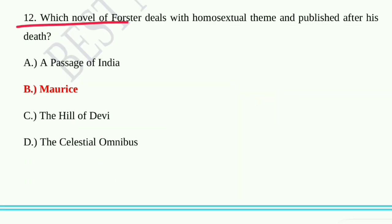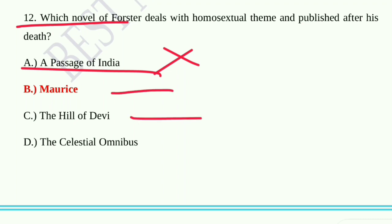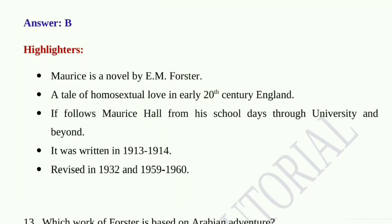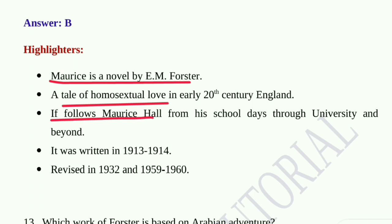Question number twelve: Which novel of Forster deals with a homosexual theme and was published after his death? Option A, A Passage to India; option B, Maurice; option C, The Hill of Devi; option D, The Celestial Omnibus. Option B, Maurice, is the correct answer. Maurice is a novel by E.M. Forster — a tale of homosexual love in early 20th century England, following Maurice Hall from his school days through university and beyond. It was written in 1913–14 and revised in 1932 and 1959–60.